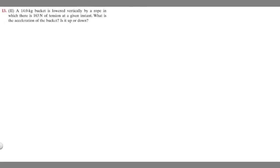In this problem we're told a 14 kg bucket is lowered vertically by a rope in which there are 163 newtons of tension at a given instant. What is the acceleration of the bucket and is it up or down?